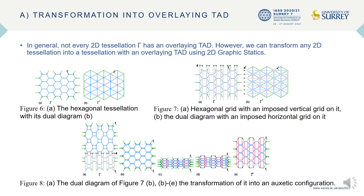Then we impose a horizontal grid on it — this is Figure 7b. This horizontal grid is perpendicular to the grid given by the direction. The dual diagram of Figure 7b is shown in Figure 8a, which is a system of squares and octagons. That system has an overlaying TAD and can be transformed into an auxetic system, as shown in Figure 8. So, we started with a hexagonal system (Figure 6a), and using 2DGS we turned it into a system with an overlaying TAD (Figure 8a), and then used our methodology to turn that into an auxetic system (Figure 8e).